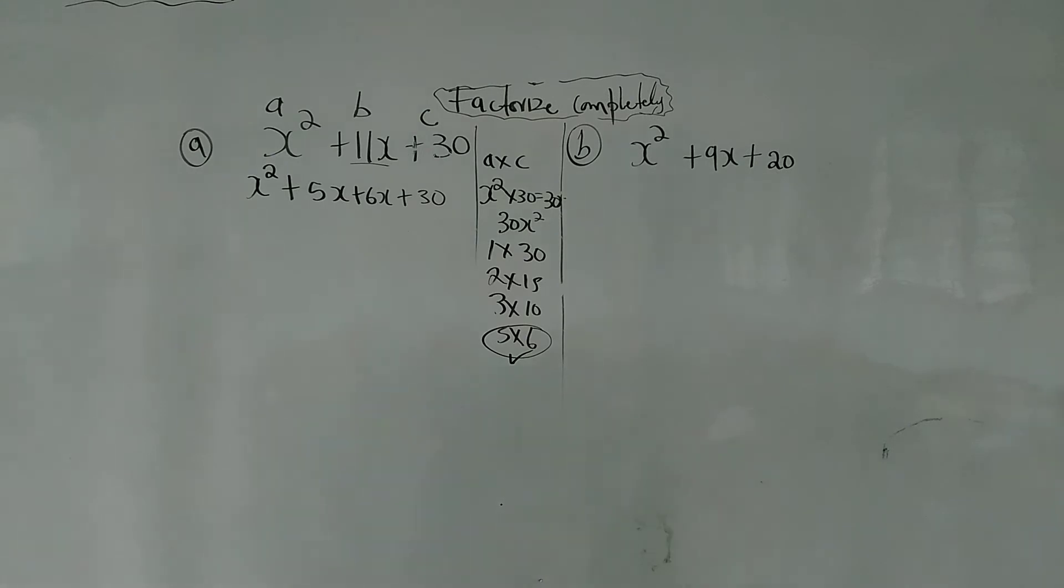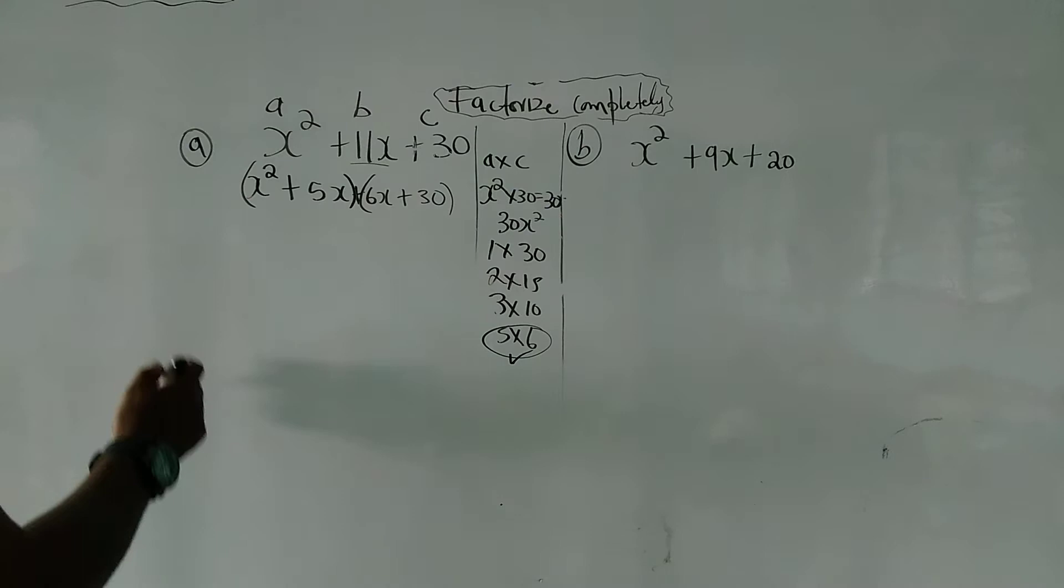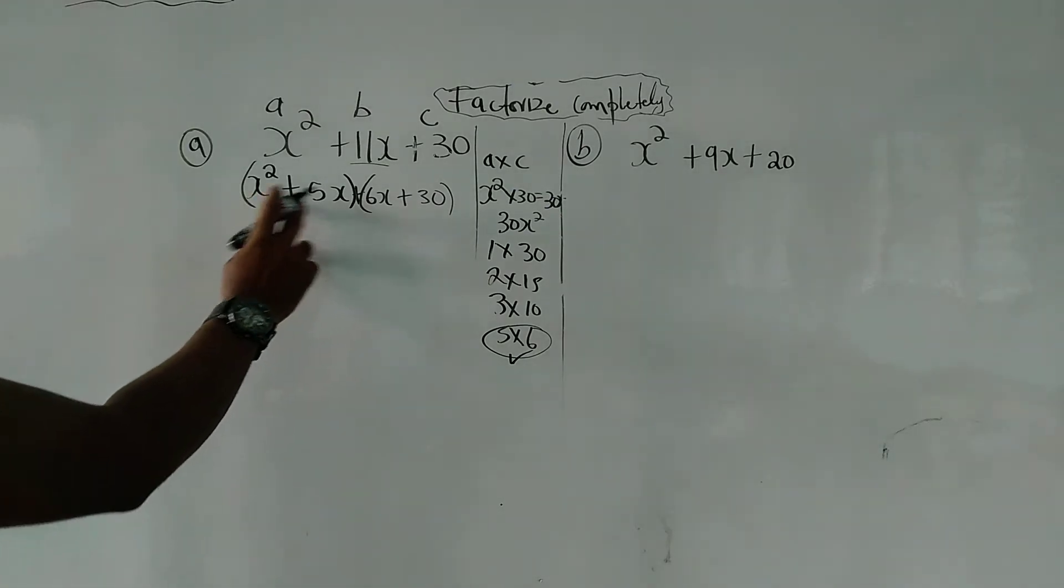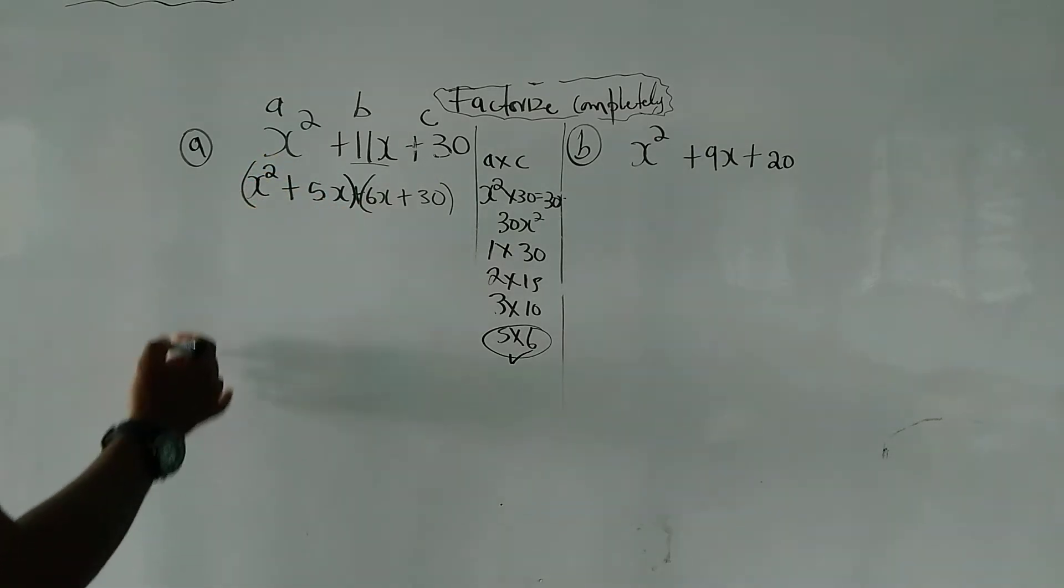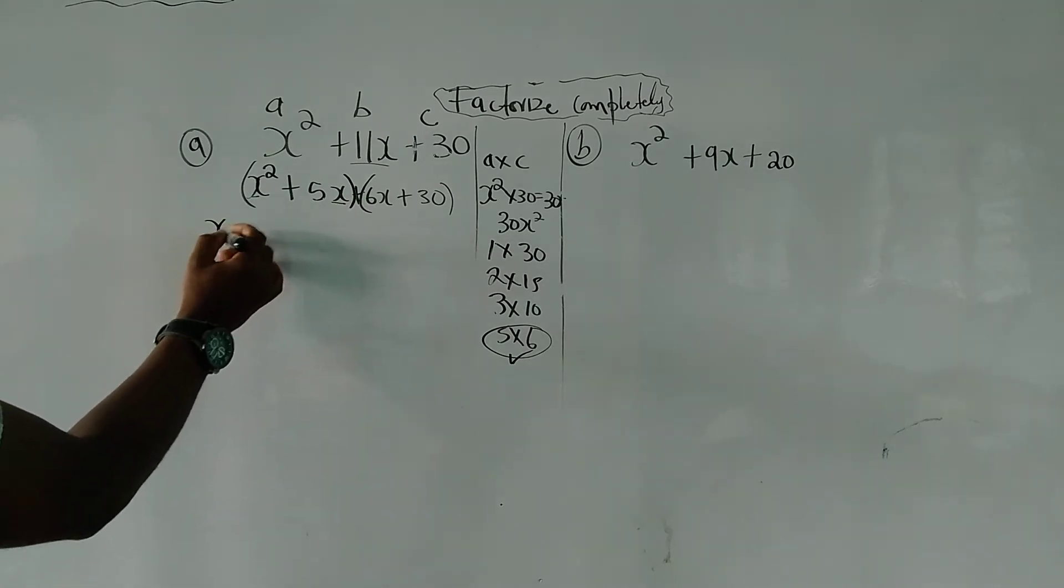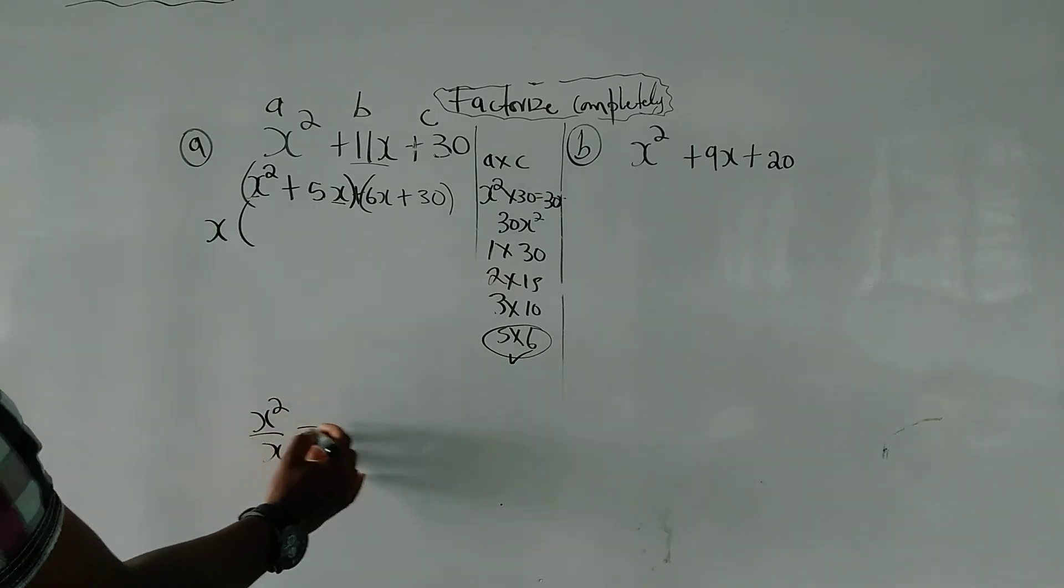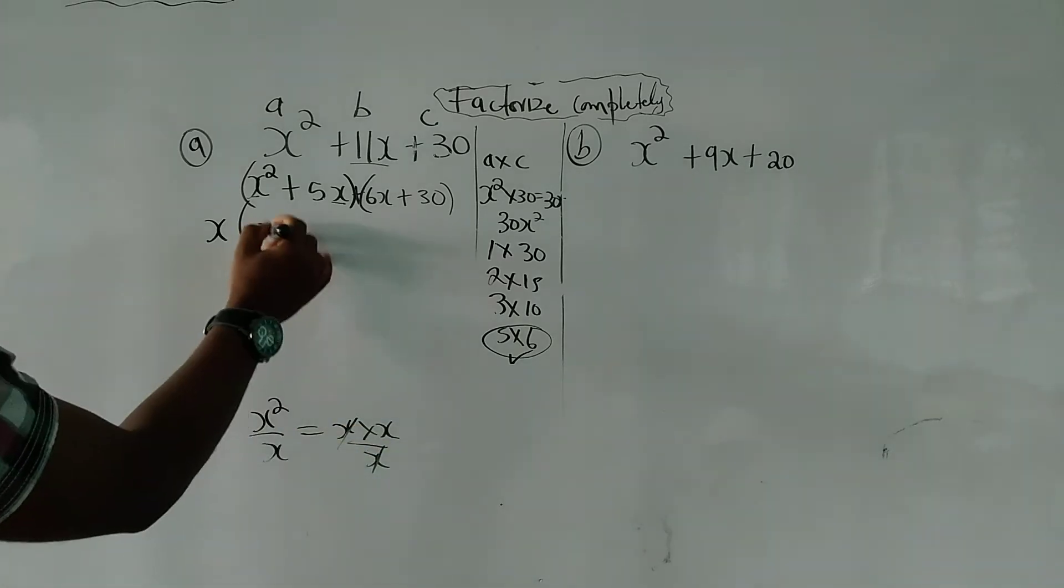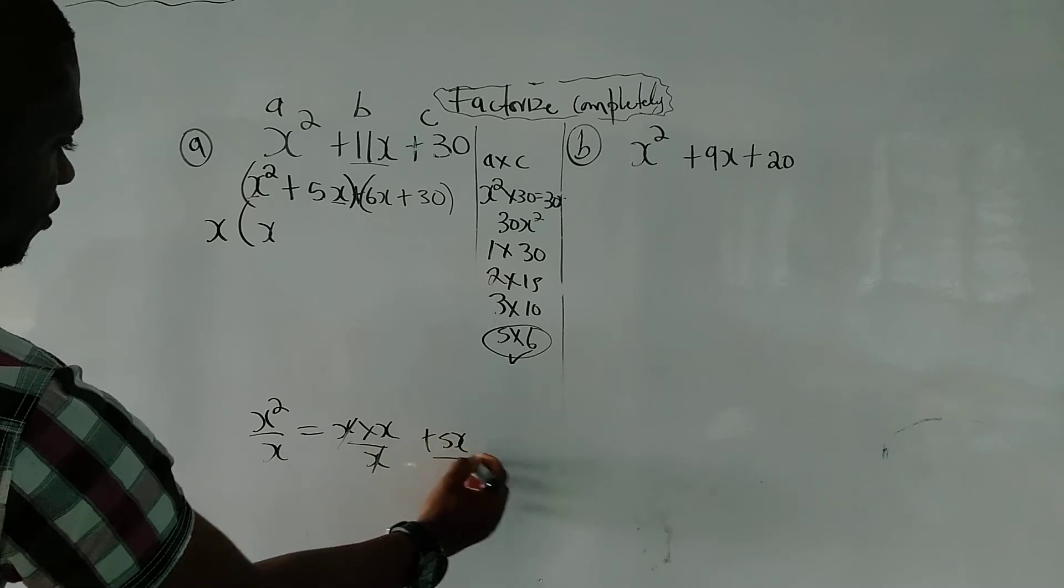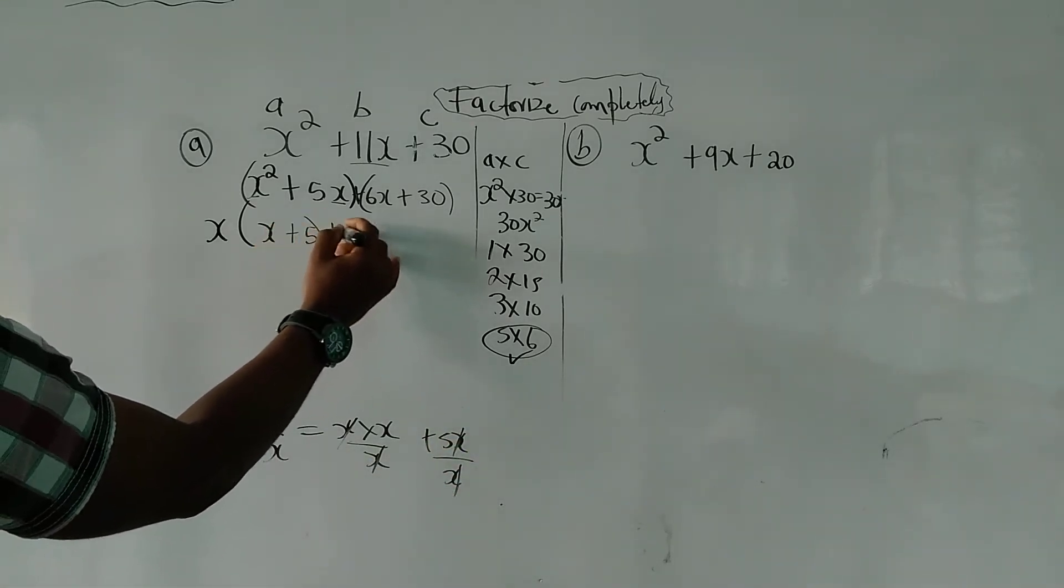When we reach to this stage now, we break it in. That is why we did that. We split it. So now we take the highest common factor of x squared and 5x. What is common between x squared and 5x? That is x, right? Because x is here, x is there. Then we divide x squared by x, which is the same thing as x times x divided by x, so that will be x. 5x divided by x, that will be 5.